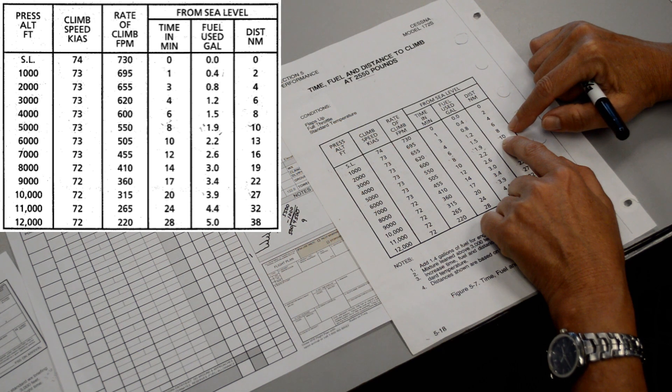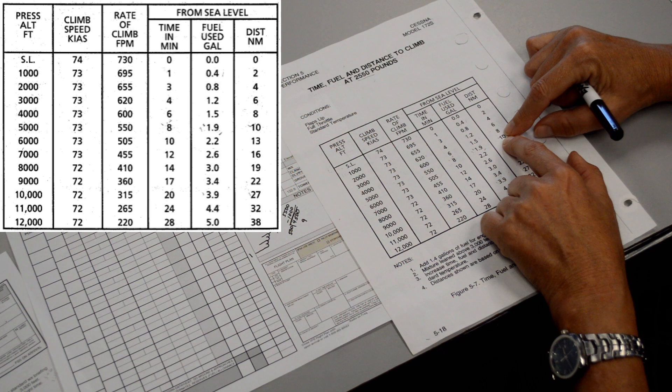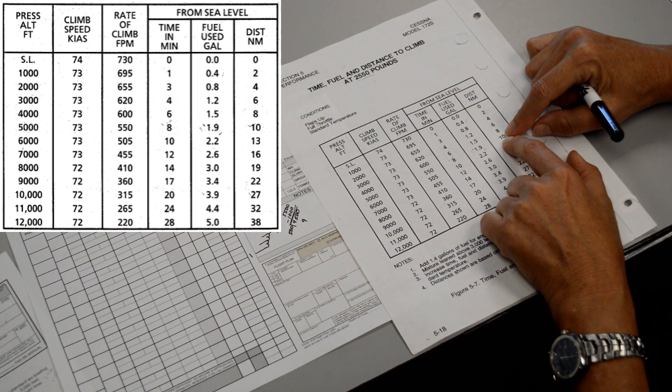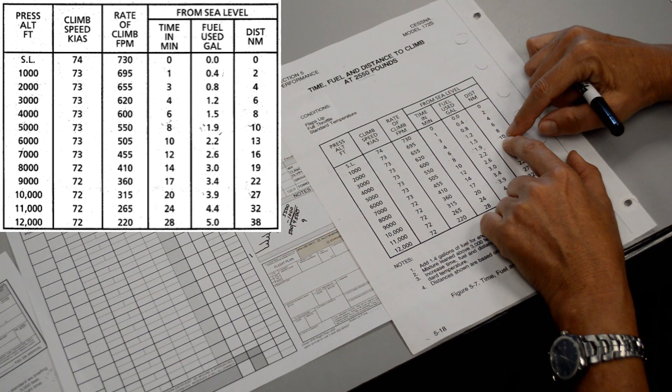But keep in mind, this is with a no wind situation. So obviously if you had a headwind, you wouldn't possibly make it to 10 miles. And if you had a tailwind, you may have traveled 12 or 13 miles.